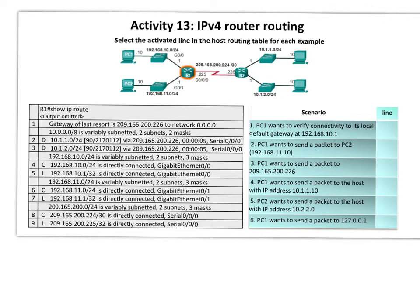Router 1 has three directly connected routes or three directly connected networks. These directly connected networks are learned once the router starts — once the interface starts, it doesn't need any information from anyone to tell it that this network is directly connected. That's why we see these three routes marked with C. This column indicates how the router learned about this route. If it's C, this means it's directly connected.